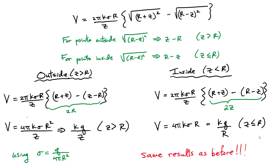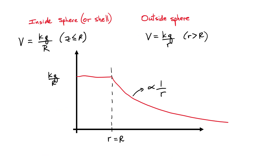As you would expect, we get the exact same results as before. Using the surface charge density definition σ = Q / (4πR²), we recover exactly the same expressions. The last thing to do is make a sketch: plotting potential as a function of distance from the center, the potential is constant from the center all the way to the radius R of the sphere, and then it drops off with a 1/r dependence outside.